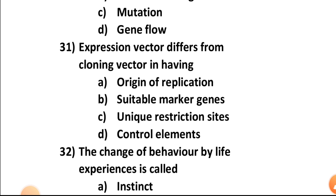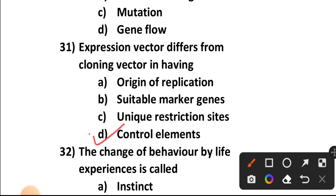Question number thirty-one: Expression vectors differ from cloning vectors in having — origin of replication, suitable marker genes, unique restriction sites, or control elements? They differ in having control elements. Option D is the correct answer.